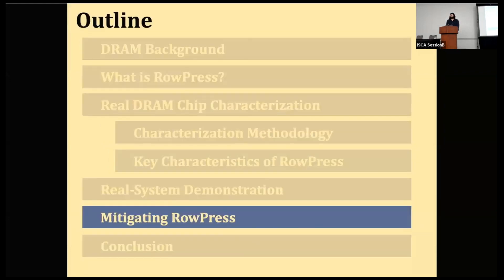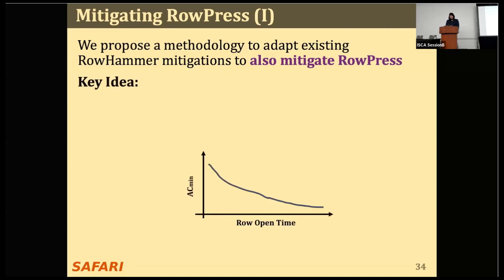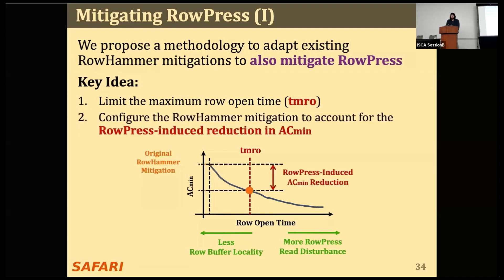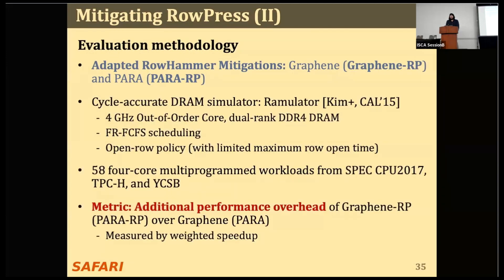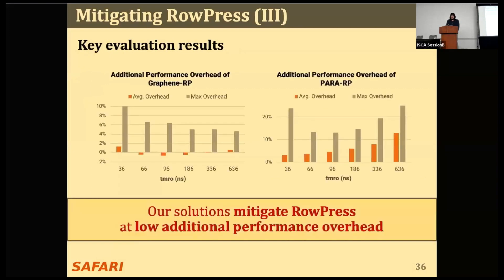Now let's see how to mitigate RowPress. We propose a methodology to adapt existing RowHammer mitigations to also mitigate RowPress. The key idea is: first, we limit the maximum time that a DRAM row can stay open in the memory controller, to strike a balance between row buffer locality and the read disturbance caused by RowPress. Second, we configure RowHammer mitigations to account for the RowPress-induced reduction in the minimum activation count needed to cause bit-flips. We evaluate our methodology on existing RowHammer mitigations, Graphene and Para, using Ramulator. Our evaluation results show that we can mitigate RowPress at low additional performance overhead.